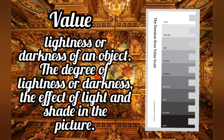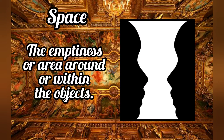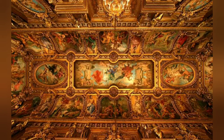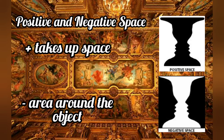Next is value. It refers to the lightness or darkness of an object — the degree of lightness or darkness and the effect of light and shade in a picture. The last is space, an element of art that refers to the emptiness or area around or within objects. Space has two types: positive and negative. Positive space refers to the part of the work that takes up space, while negative space is the area around that object.